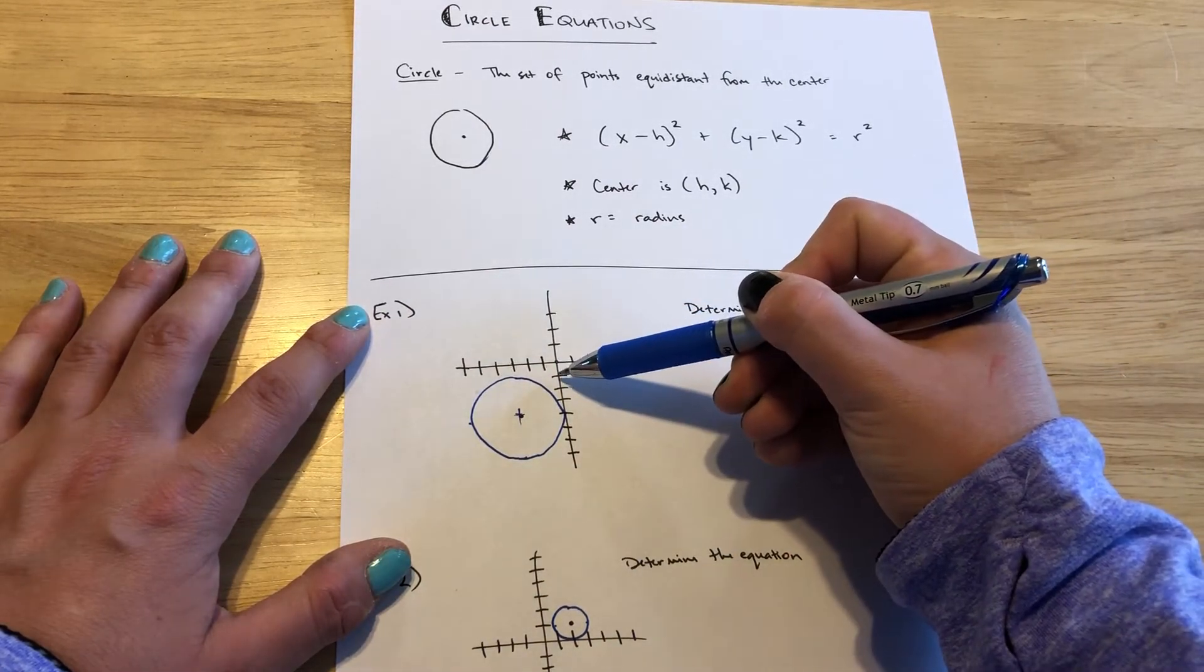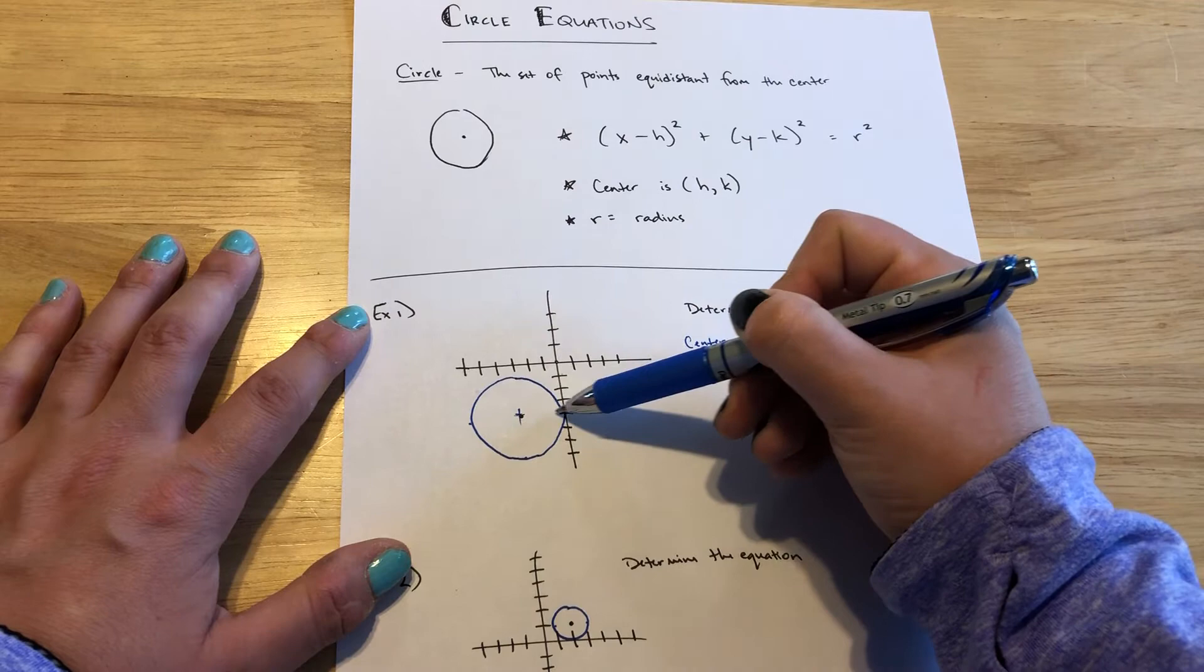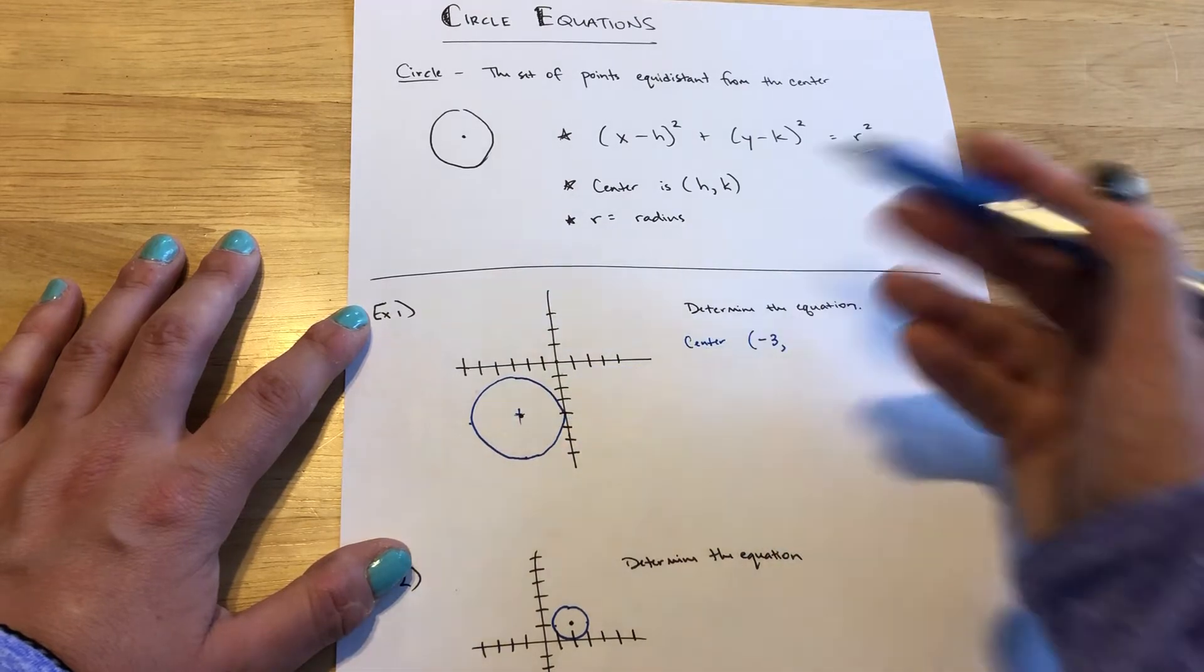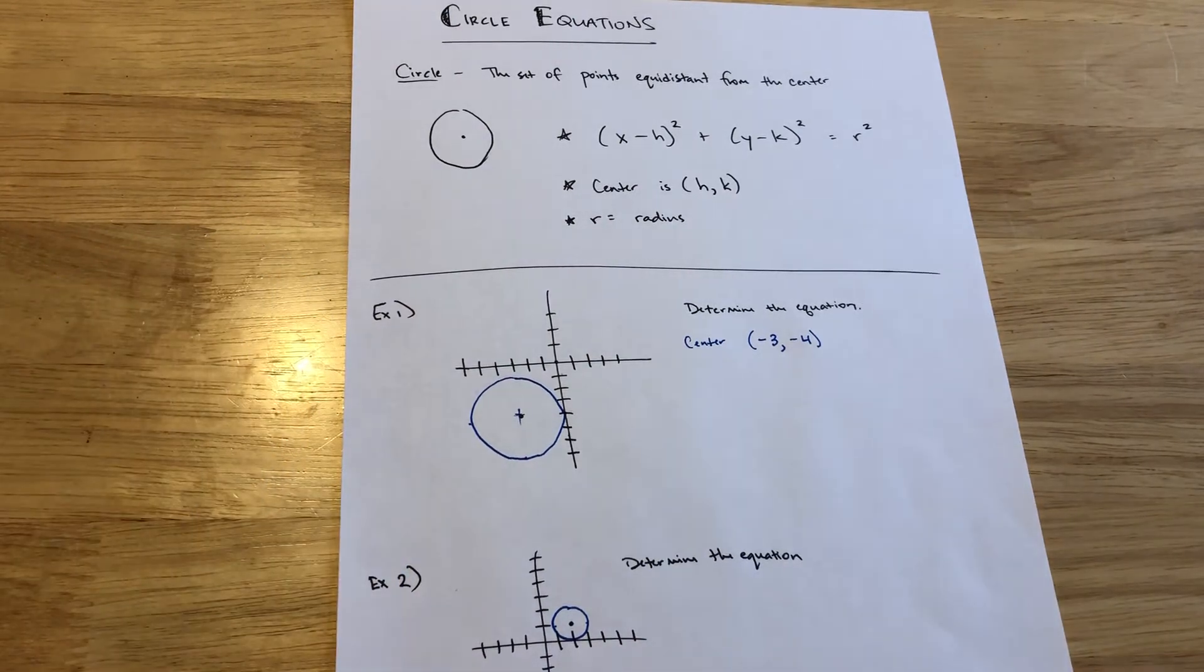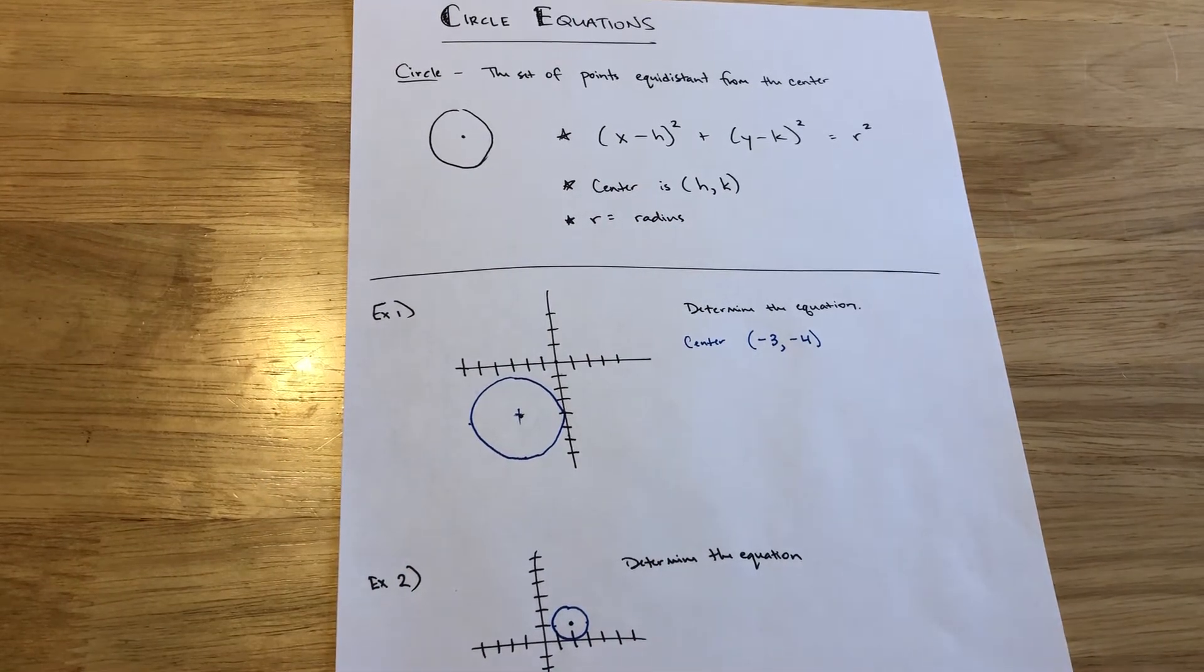From that center point, if I count down 1, 2, 3, 4, that puts me in line with the center. That means the y value is negative 4. So the coordinate pair for the center is negative 3, negative 4.